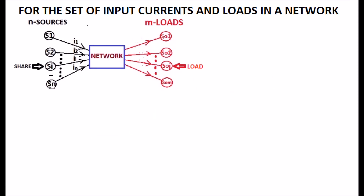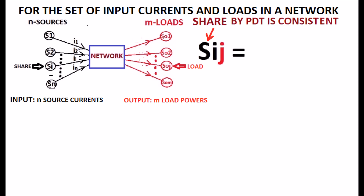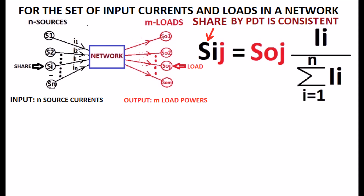Refer the display. It shows a set of n input currents and m load powers as output. The share of the i-th source to the j-th load by the power division theorem, Sij, is equal to the j-th power Soj multiplied by the ratio of the i-th source current Ii divided by the sum of all source currents.